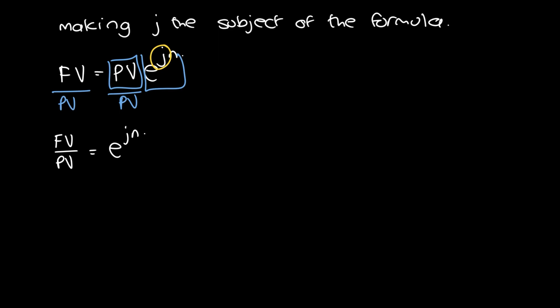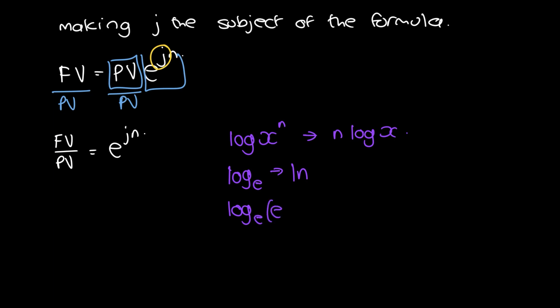We're going to need our log rules. The key rule is: log(x^n) equals n·log(x). We also look at the natural log — log base e is ln, which is the natural log — and ln(e) equals 1.